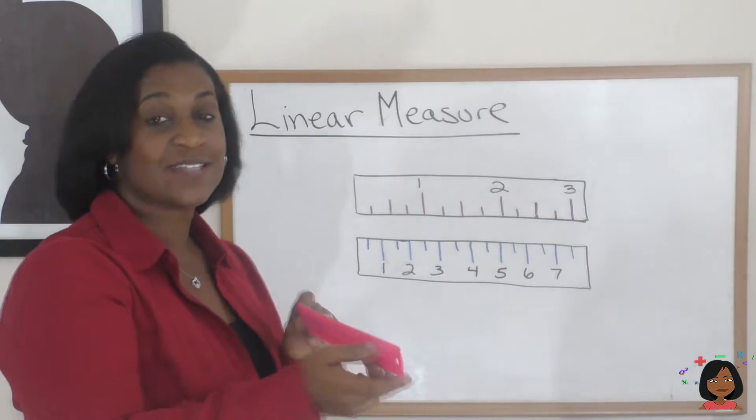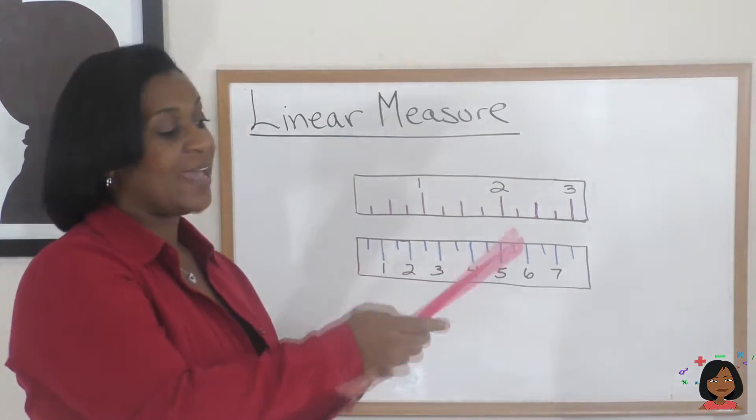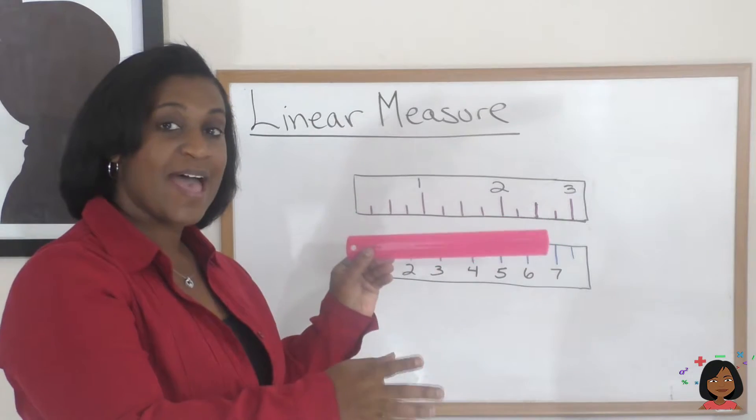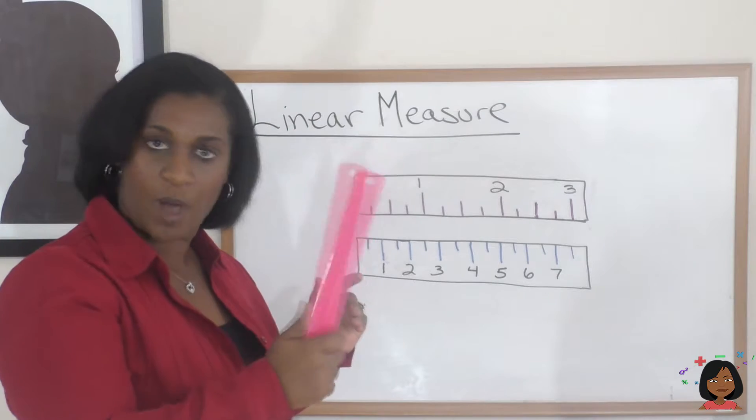So one side of the ruler has the US customary system, which is the inches. And the other side of the ruler has the metric system, which is the centimeters. So two things in one. How great is that?